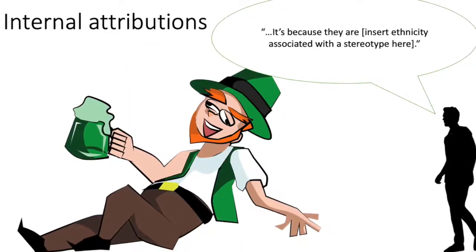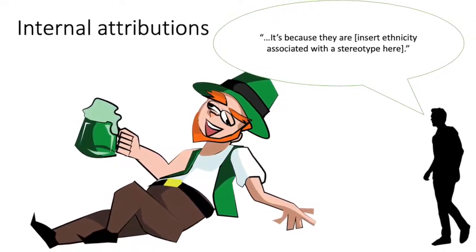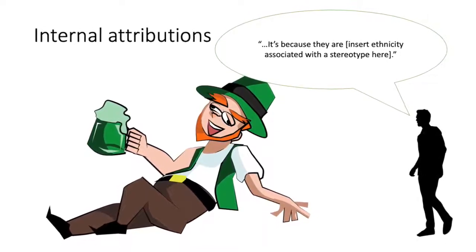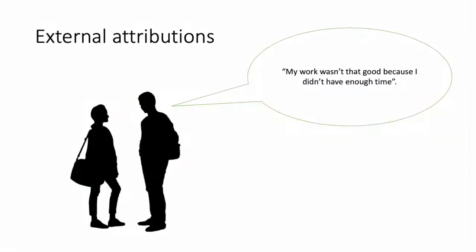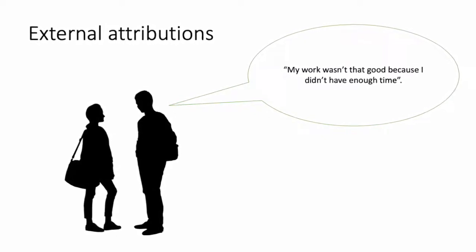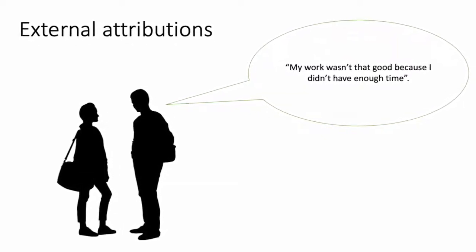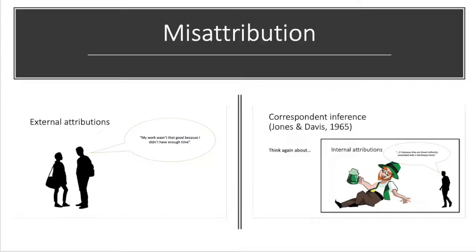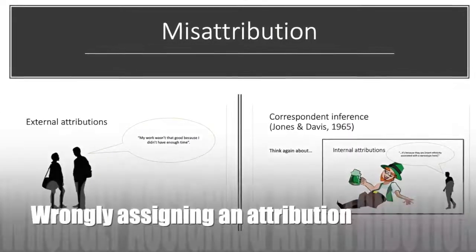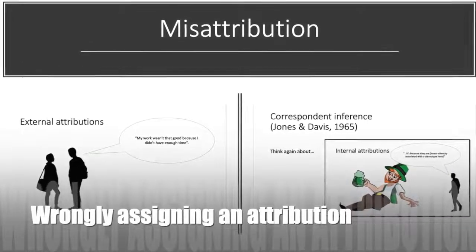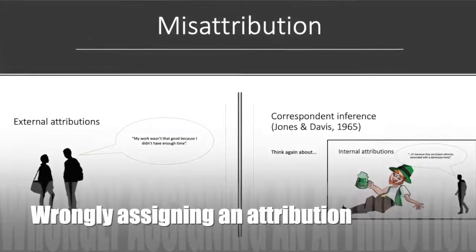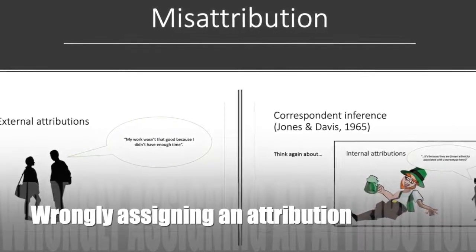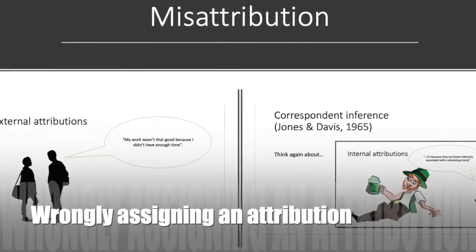Things to consider about attribution include internal attributions, which assign causes of one's own or others' behaviour to dispositional factors, while external attribution is to assign causes of one's own or others' behaviour to situational or environmental factors. Misattribution is to assign a cause to an incorrect source — for example, attributing a behaviour to an internal source when it actually has nothing to do with explaining the behaviour.